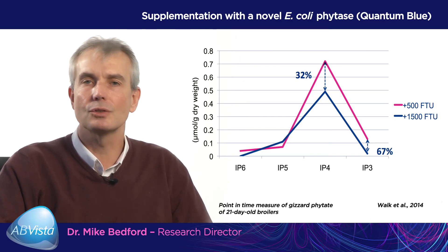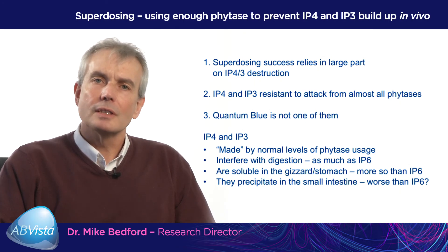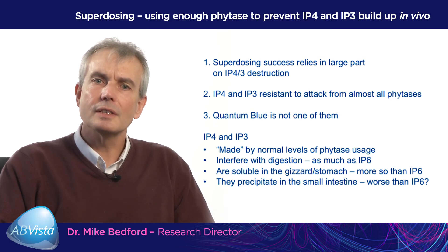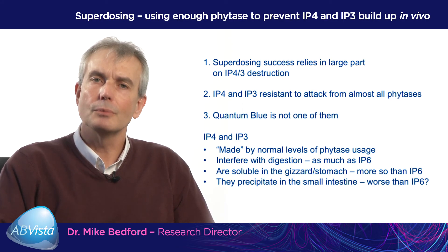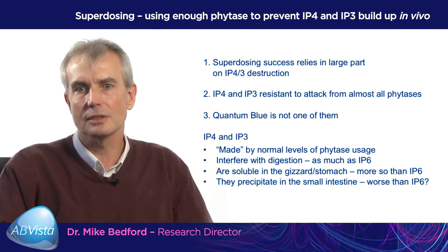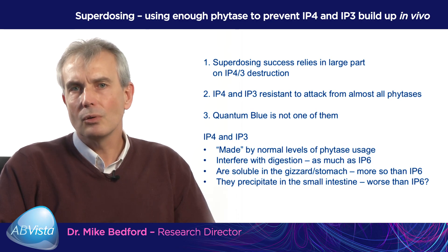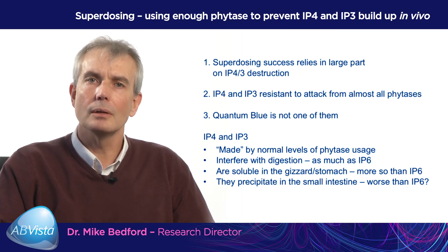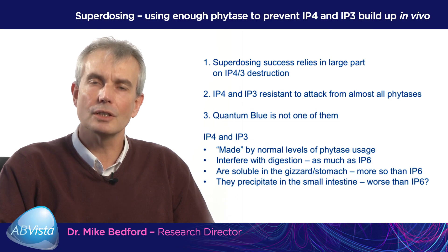There's a 67% reduction in IP3 concentrations when you superdose compared to a regular dose of Quantum Blue phytase. With respect to superdosing, I've been focusing on IP4 and IP3. What I'd like to reinforce is that IP4 and IP3 are made by normal phytase usage levels — they are not present in an animal which is not fed phytase. They interfere with digestion possibly as much as IP6. The problem with IP4 and IP3 is they're very soluble in the stomach and can move easily into the small intestine where they precipitate with zinc and interfere with protein digestion. Superdosing needs to consider destruction of IP4 and IP3 just as much as IP6, as all of these esters play a significant role in reducing the ability of the animal to digest its feed effectively.